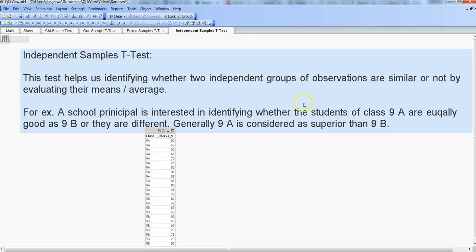So 9A students and 9B students are independent of each other. They have different skills and different sort of learning—well, learning the same but their mindset, their grasping power, and everything is independent of each other because every personality is different, right? So that's why this is an independent test.